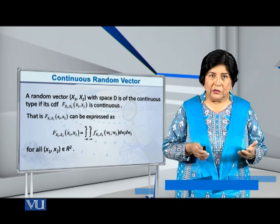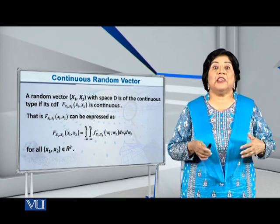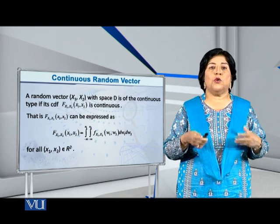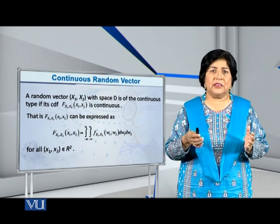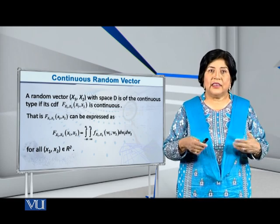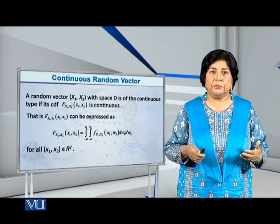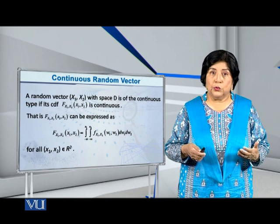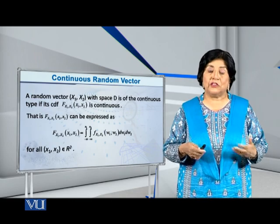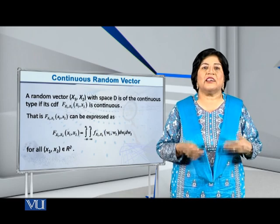So what is the definition of a random vector if we are dealing with two variables, x1 and x2, and if they are of the continuous type? Well, obviously it will be represented as an ordered pair and we can write inside the bracket x1 comma x2, and we can say that it is defined on the space capital D if its cumulative distribution function capital F of x1, x2 at the point small x1, small x2.